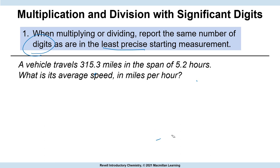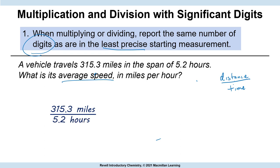Let's practice multiplying and dividing. We want to calculate speed — distance per time. Say we drive 315.3 miles in 5.2 hours. What was our average speed? All non-zero digits are significant, so there are certainly four in 315.3 and only two significant digits in 5.2 hours. The least precise measurement is 5.2, so we're going to carry two digits in our answer.